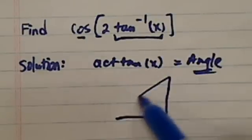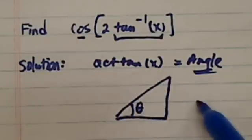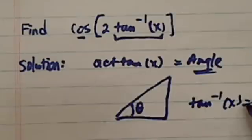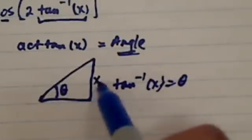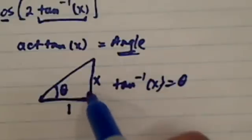So what we do from here is we're going to draw a right triangle and we're going to call this angle theta. If tangent inverse of x is equal to this angle, then that's saying that if I'm looking over here, tangent is whatever you're looking at over whatever this leg is.